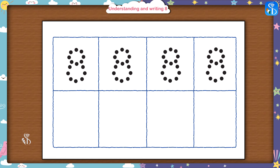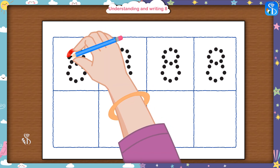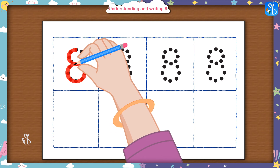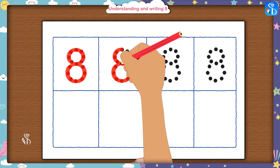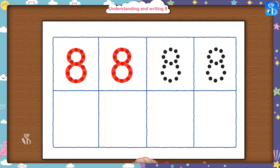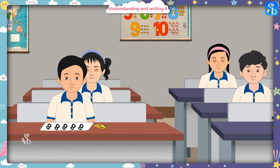Now look here. I have drawn the figure of number 8 with the help of dots. First we will trace this figure with the pencil for practice, and then write number 8 on our own. Come on, let's start now. So the figure of number 8 is ready. Now trace the remaining figures as well. Well done, all of you.